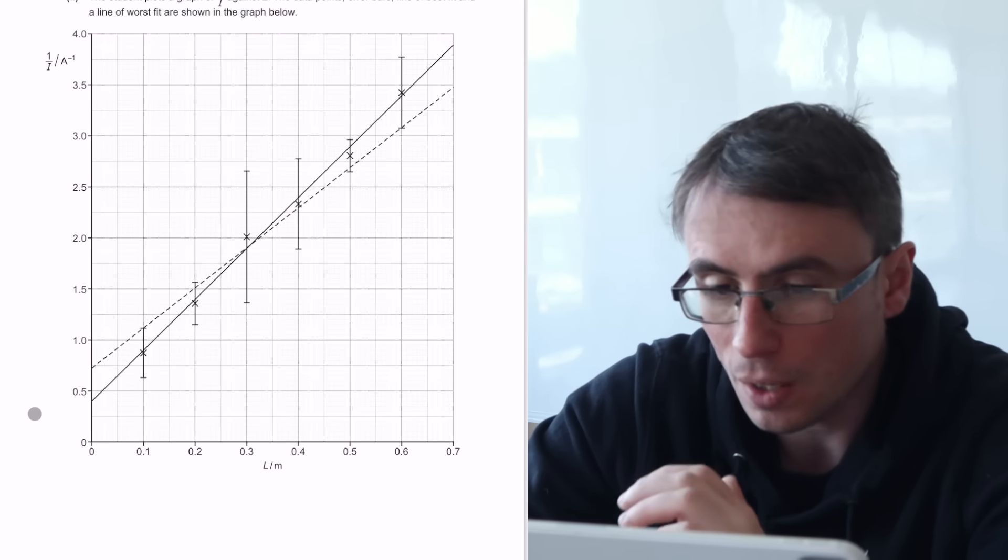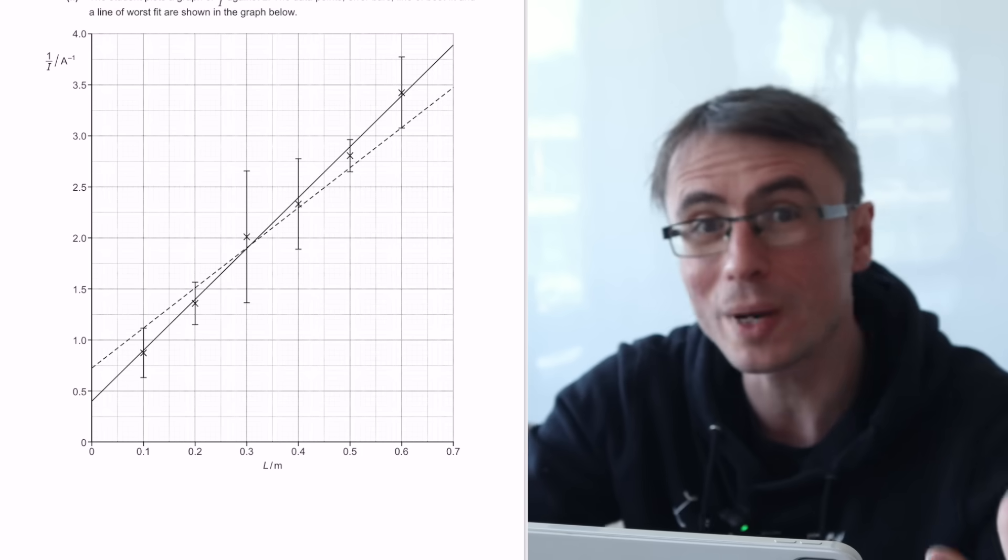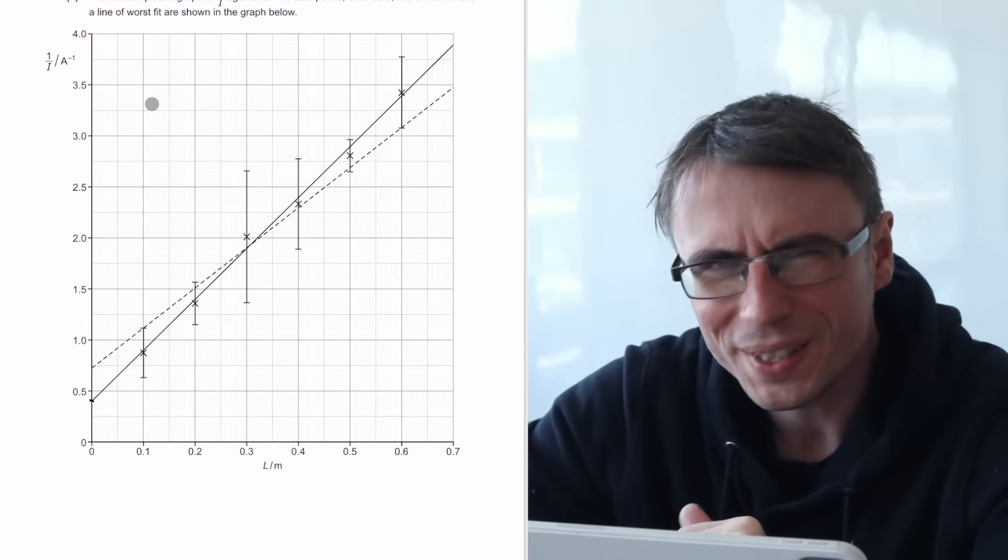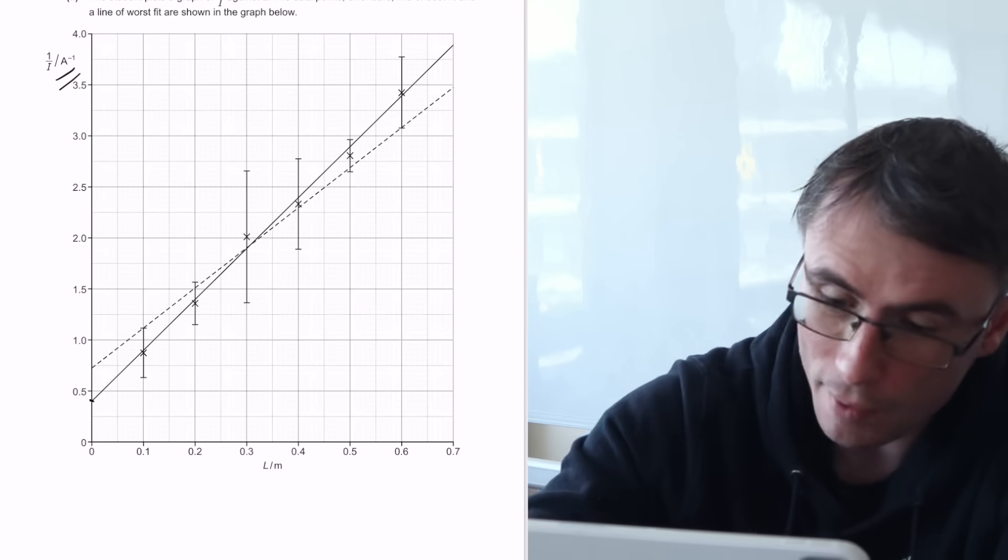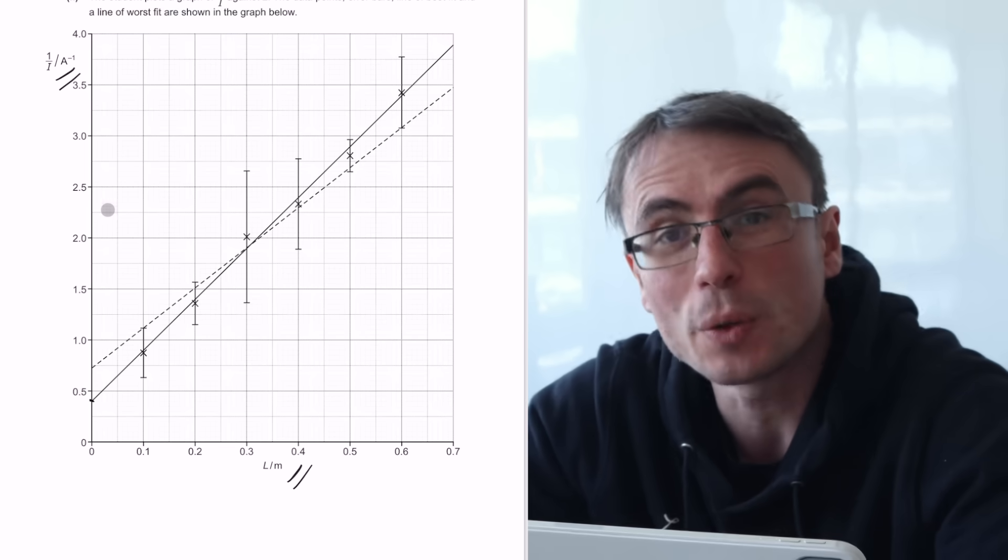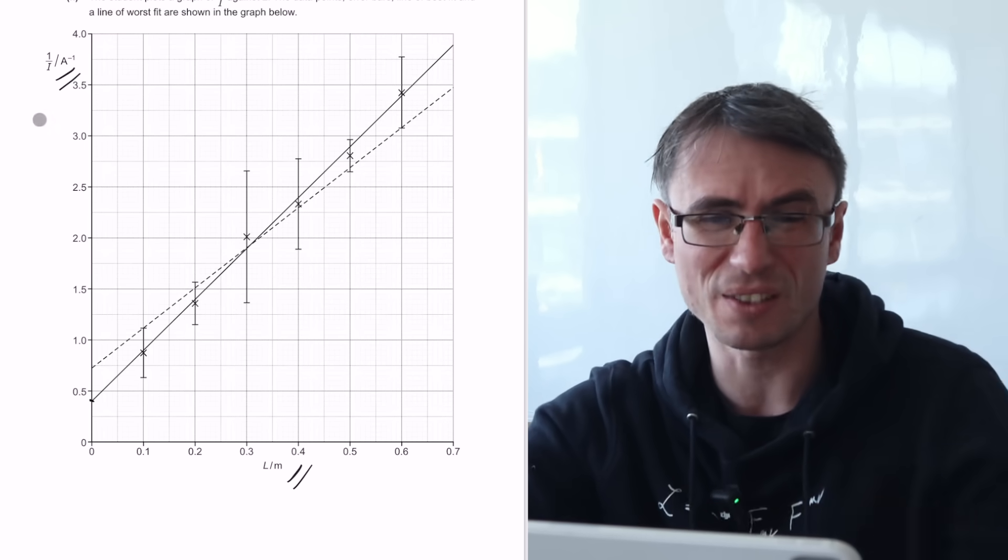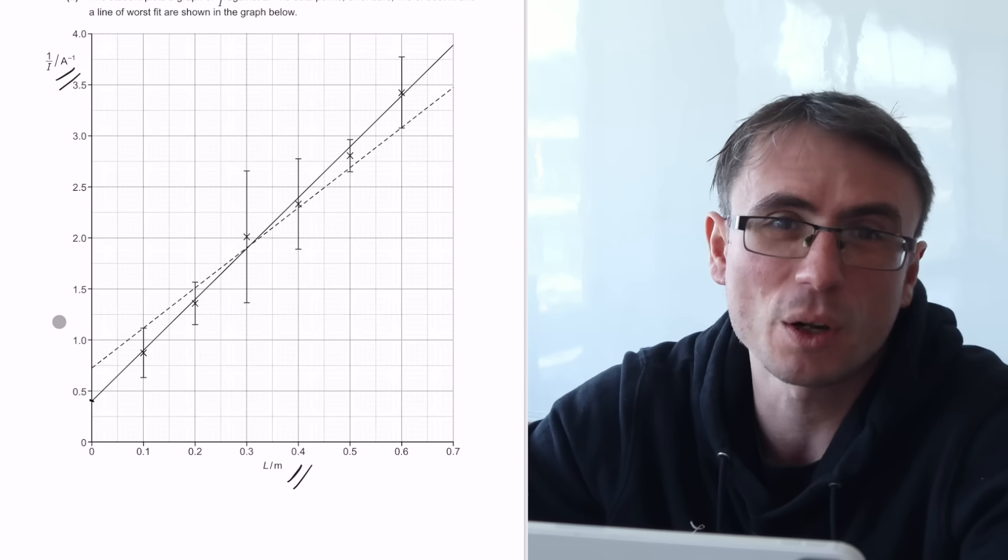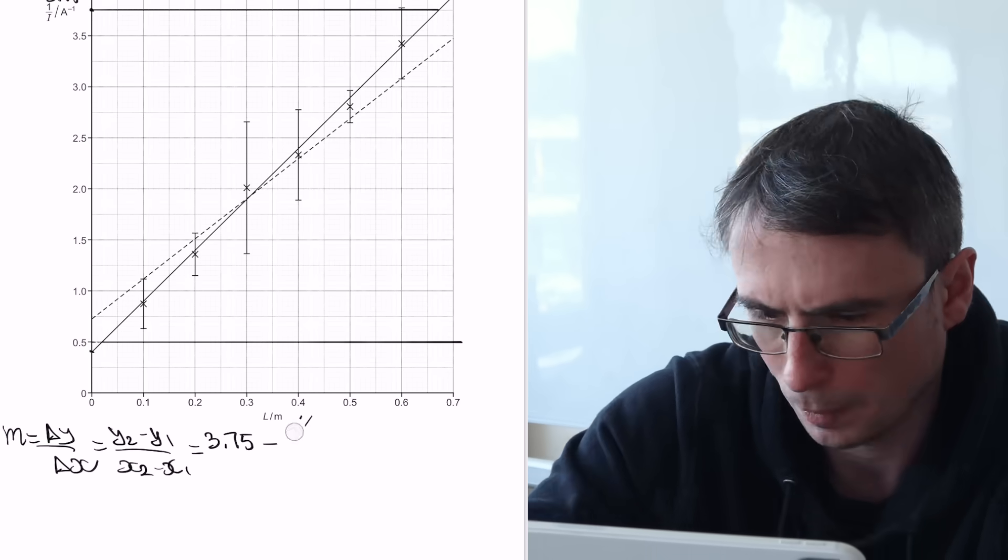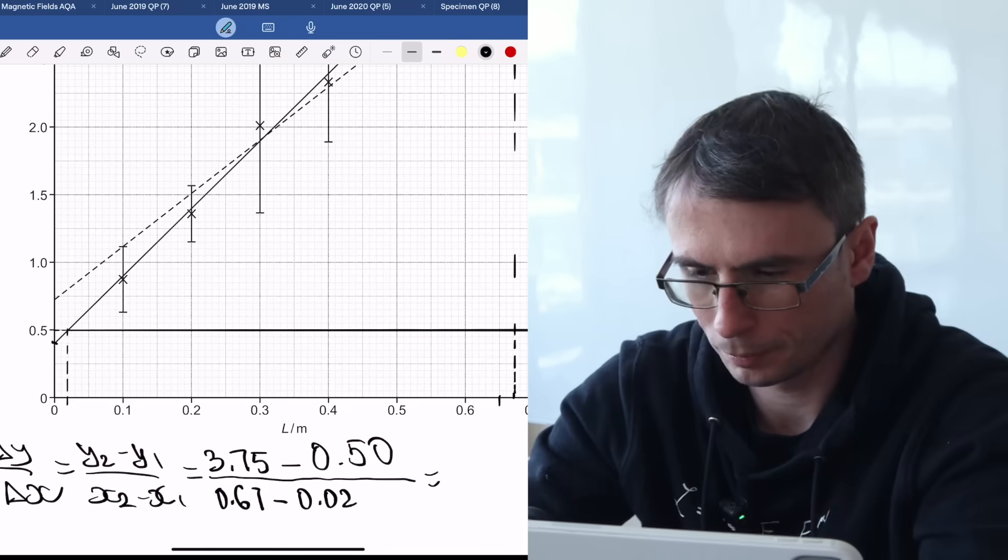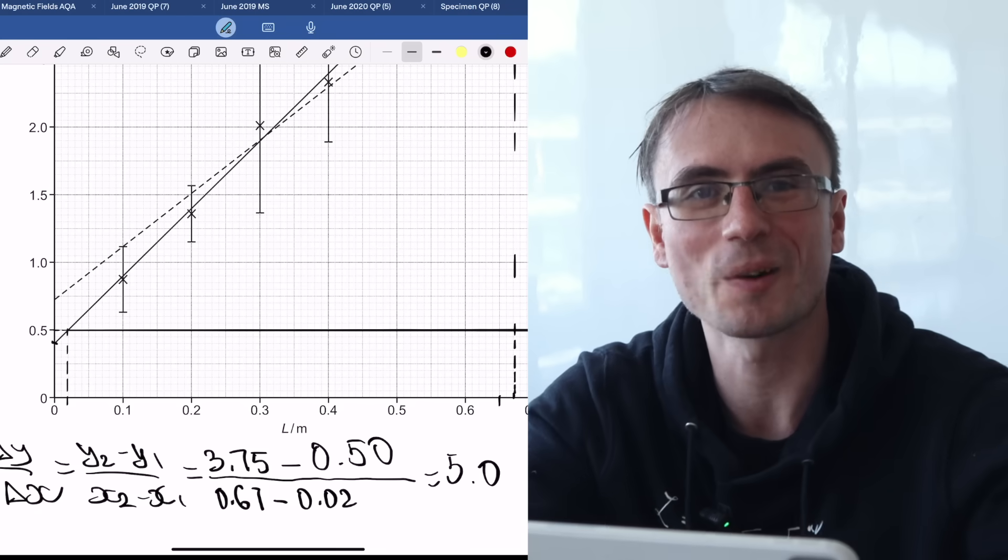We're going to use the gradient of the line of best fit. And we're going to make sure that our gradient triangle is as large as possible. Before we even start taking any readings, I will also check the units of a graph. And in this case, the units are fine, but very often we might get prefixes or multiplication of certain factors within the plotting. So always something to do. And the gradient is exactly equal to 5.0. How great is that?